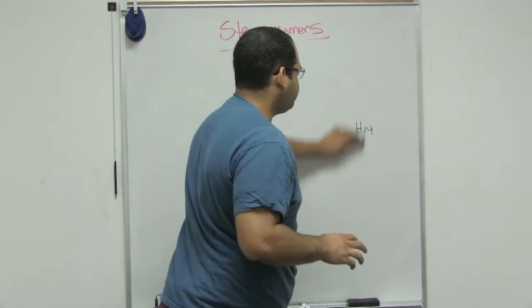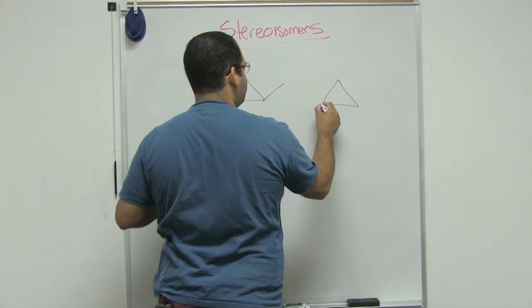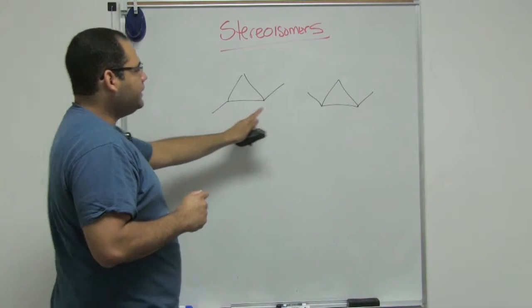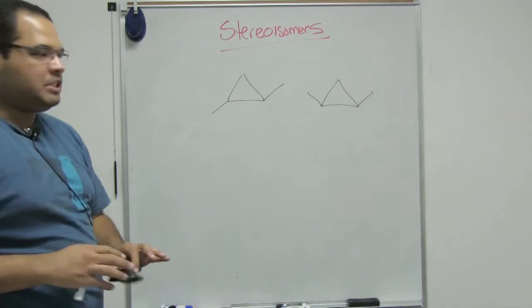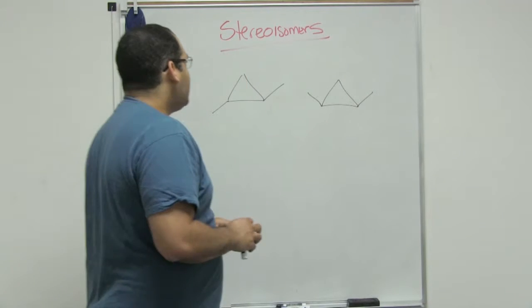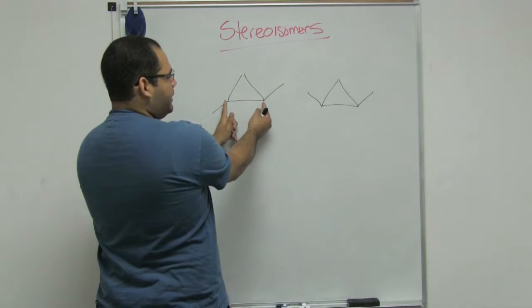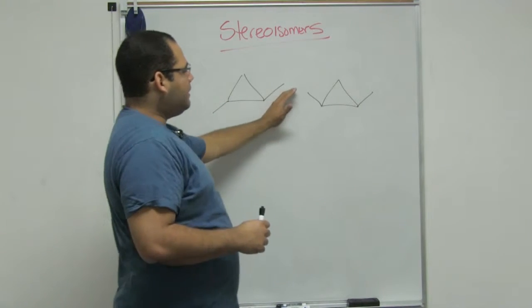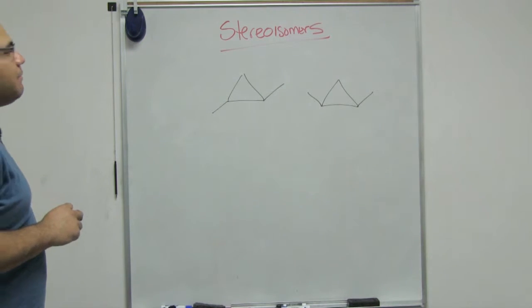Stereoisomers are related to the idea that the connectivity is the same. In this particular example, both are connected to carbons 1 and 2 — this is 1,2-dimethylcyclopropane and this is also 1,2-dimethylcyclopropane. However, the arrangement in space is a little bit different. Here we have one methyl pointing down and the other pointing up, while here both are pointing up.